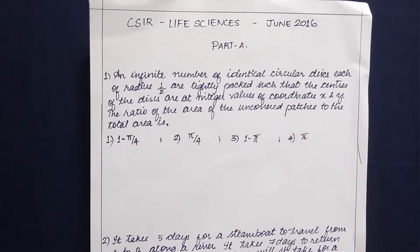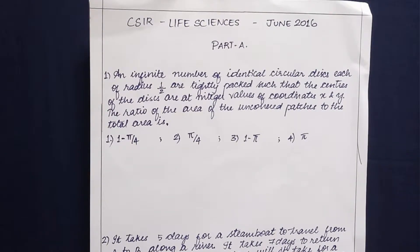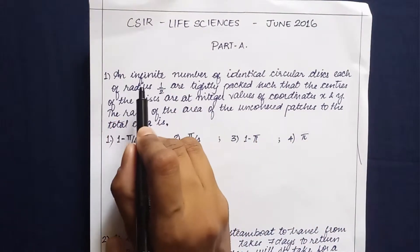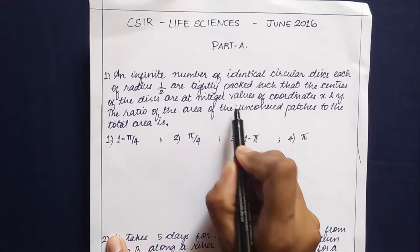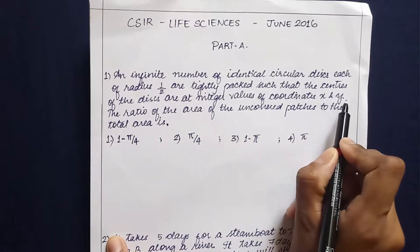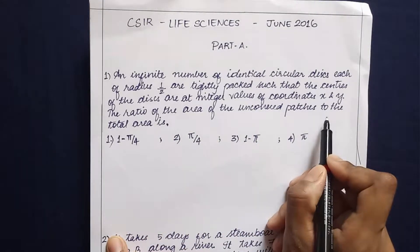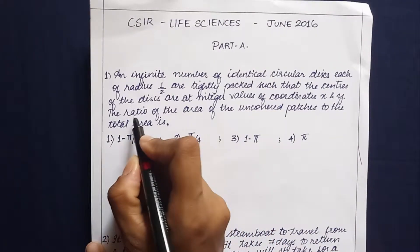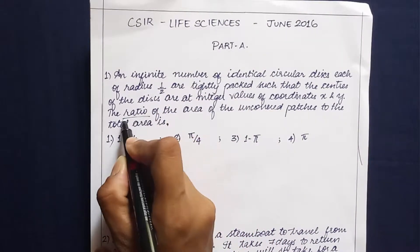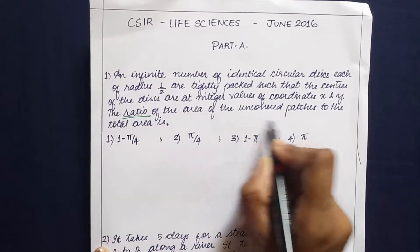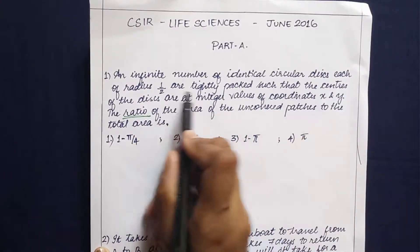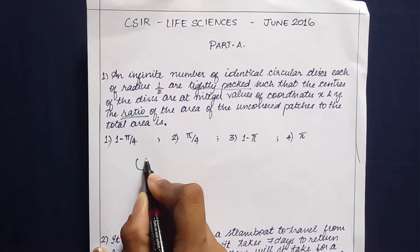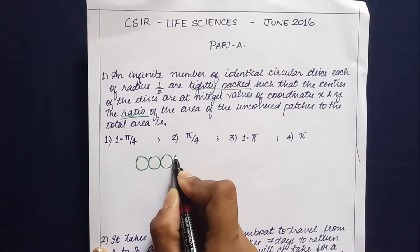Hello everyone, welcome to the third benches YouTube channel. Today we'll see June 2016 party questions of CSIR Life Sciences. Question 1: an infinite number of identical circular disks each of radius half are tightly packed such that the centers of the disks are at integer values of coordinates x and y. We have to find the ratio of the uncovered patches to the total area.